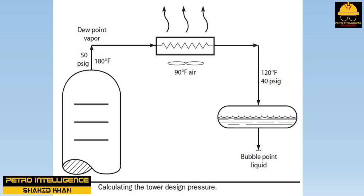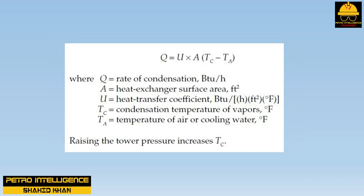Another reason to raise tower pressure is to permit higher reflux rates. If the pressure controller is set too low, then during hot weather, when condenser capacity becomes marginal, the level in the reflux drum will be lost. If we then raise the pressure set point, the drum will refill. Raising the tower pressure also increases the reflux drum pressure, raising in turn the temperature at which the vapors condense. The rate of condensation is calculated from: Q equals U times A times (TC minus TA), where Q equals rate of condensation in BTU per hour, A equals heat exchanger surface area in square feet, U equals heat transfer coefficient in BTU per hour square feet degree F, TC equals condensation temperature of vapors in degree F, and TA equals temperature of air or cooling water in degree F. Raising the tower pressure increases TC.